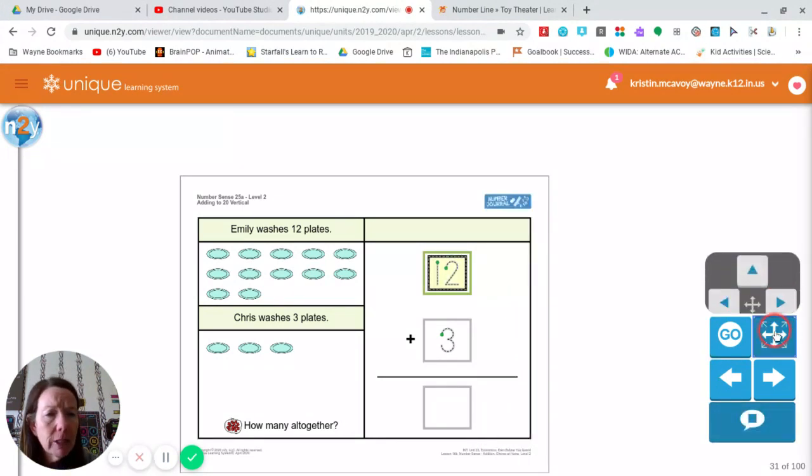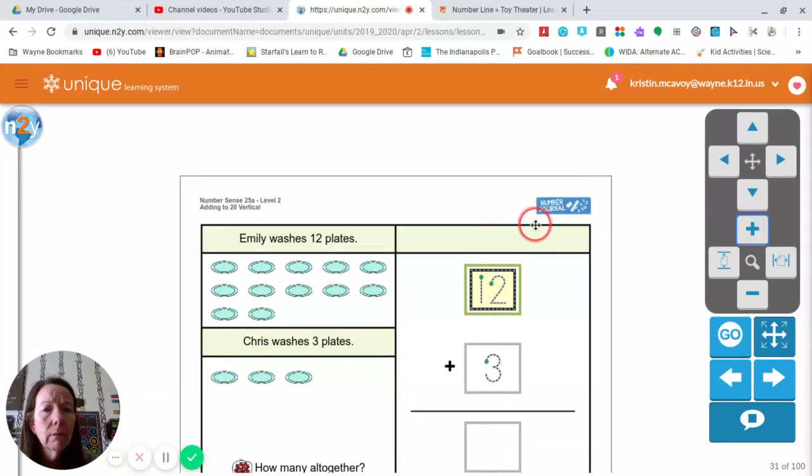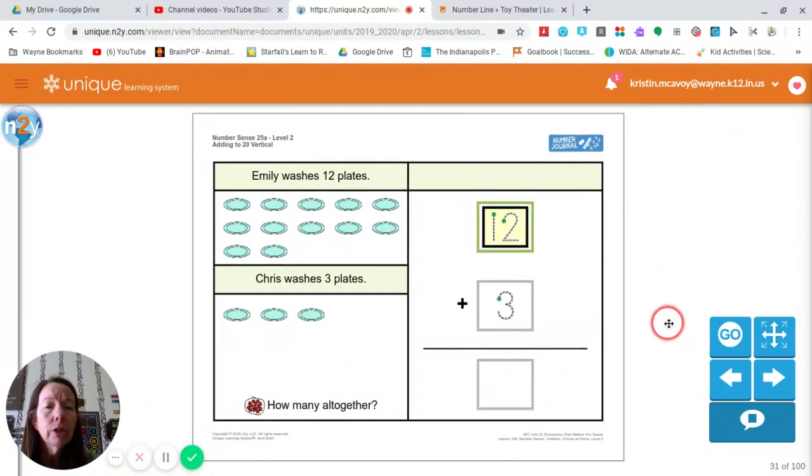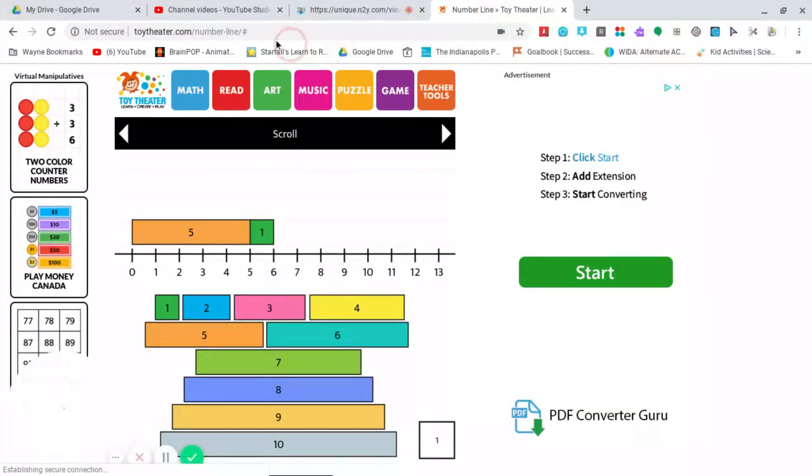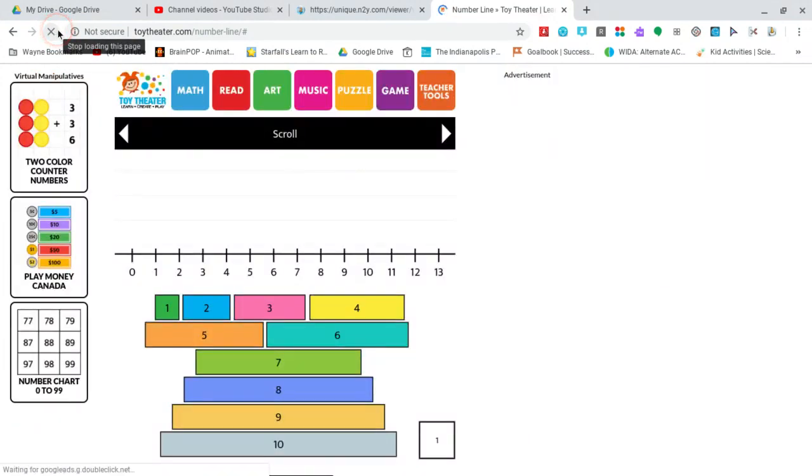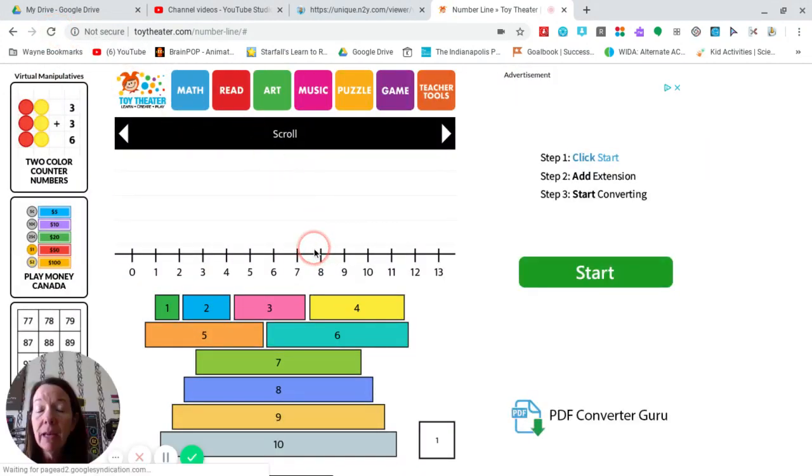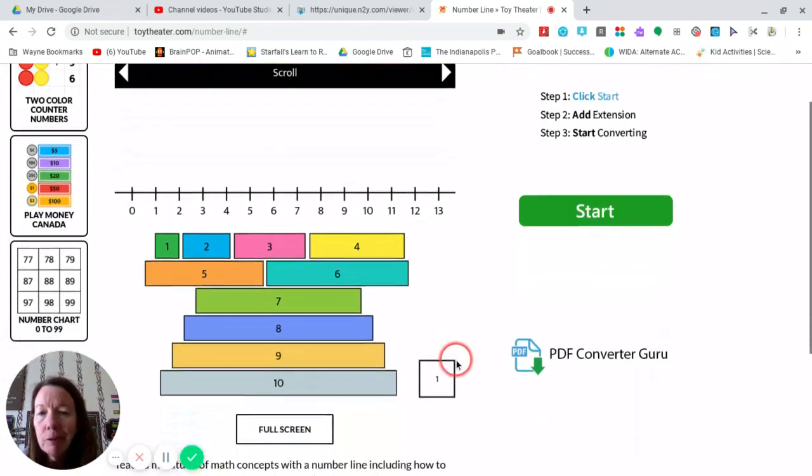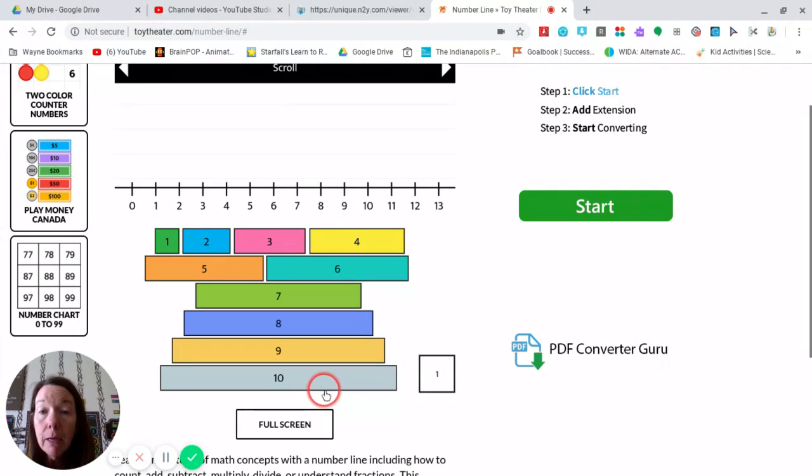If you want to use that Toy Theater number line, you still can even for numbers that go farther, and I'll show you how to make that happen. We don't have a number 12 here, so we do it by using that tens and ones strategy to make the number 12. Are you ready? We know it's one 10, we pull that up, and two ones for the number 12. Now we're at 12: 10, 11, 12.